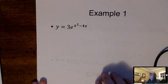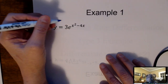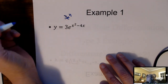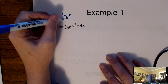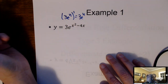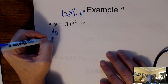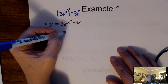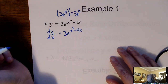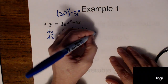Here's an example. Think of the chain rule and think of this as 3e to the u first. The derivative of 3e to the u is 3e to the u. But then you have to deal with that u. So the derivative has two pieces: it's 3e to the x squared minus 4x — notice I didn't take the derivative up there — times the derivative of the power, which is 2x minus 4.